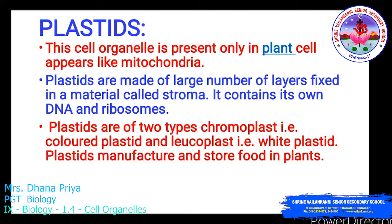Plastids are cell organelles present only in plant cells and appear similar to mitochondria. Plastids are made up of a large number of layers fixed in a material called stroma and contain their own DNA and ribosomes. Plastids play a major role in plant cells by providing pigmentation — the red, white, or green color of plants. Plastids are of two types: chromoplast, which is the colored plastid, and leucoplast, which is the colorless plastid. Plastids manufacture and store food in plants.